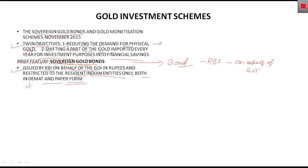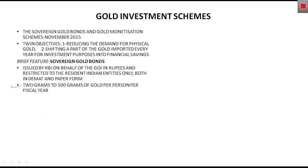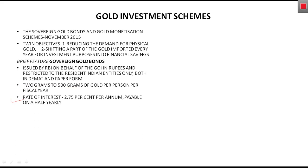Regarding quantity limits: the minimum you can buy is 2 grams and the maximum is 500 grams per fiscal year. The fiscal year runs from 1st April to 31st March. So within one fiscal year you can buy a minimum of 2 grams — below which you are not allowed to buy — and a maximum of 500 grams.